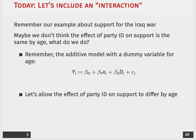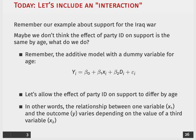Now, let's allow the effect of party ID on support to differ by age. What do we have to do now? In other words, we want the relationship between one variable, in this case party ID, and the outcome support for the war vary depending on this third variable, in our case the dummy variable for young and old age.